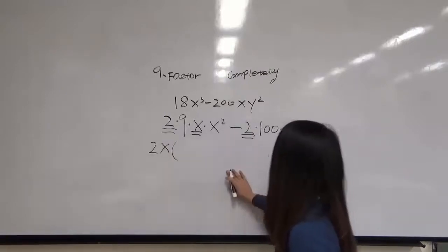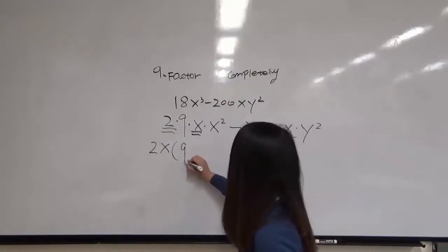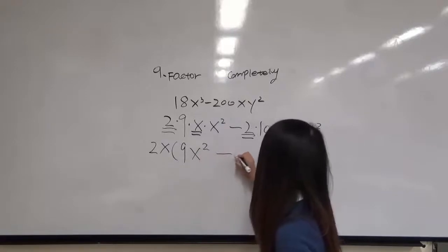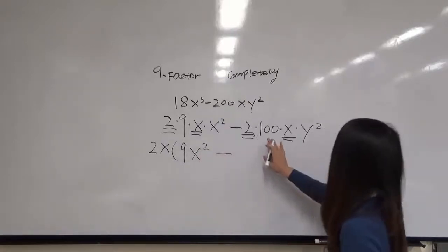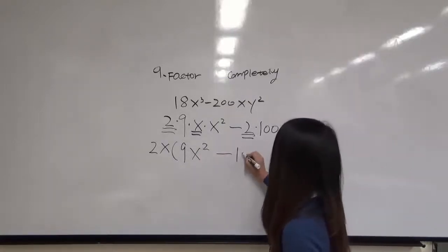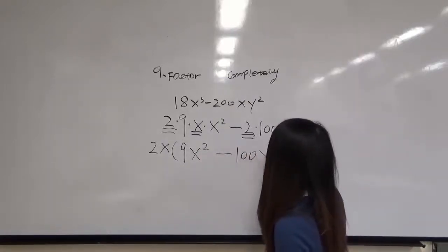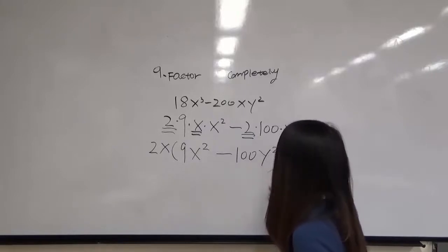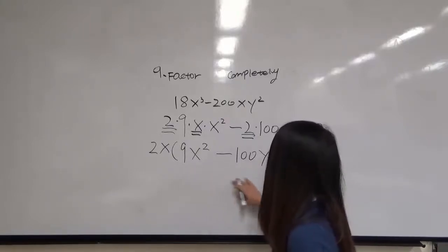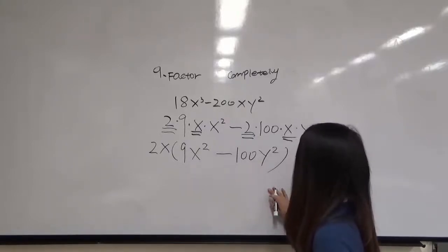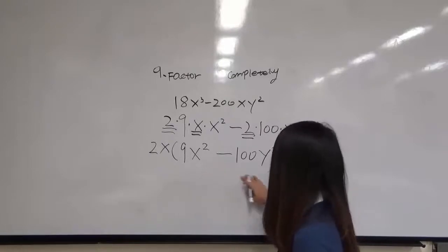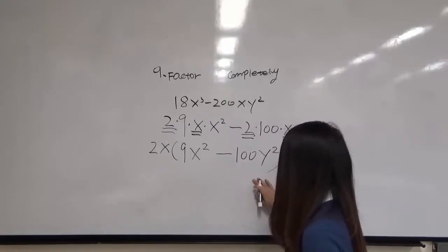Then what we are left with is 9x squared minus 100y squared. But we haven't done with this problem yet — we need to factor out this expression further.